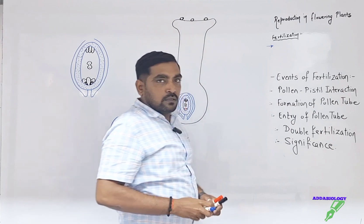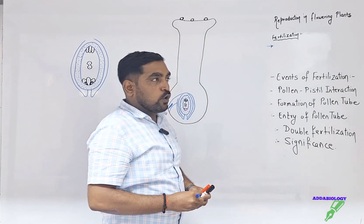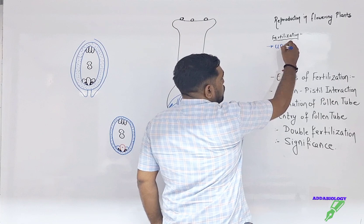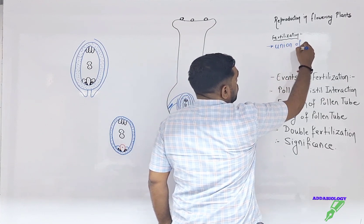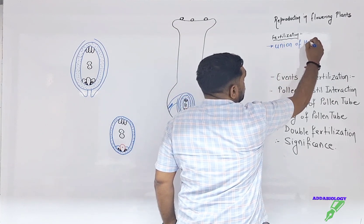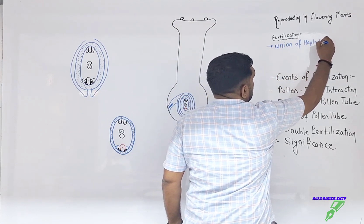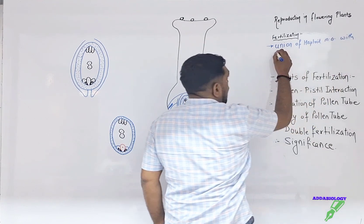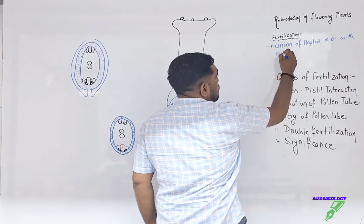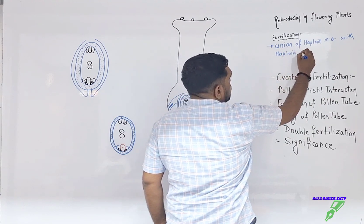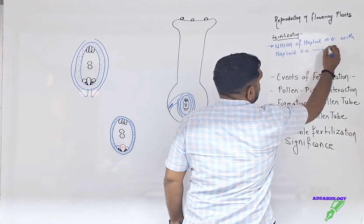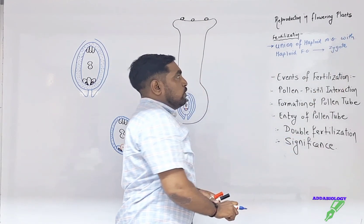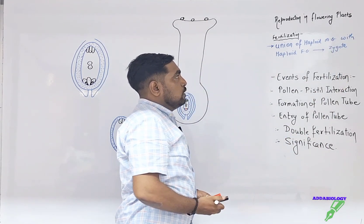Whenever we talk about fertilization, what comes to mind is that fertilization is the union of a haploid male gamete with a haploid female gamete for the formation of a zygote. This process is called fertilization.